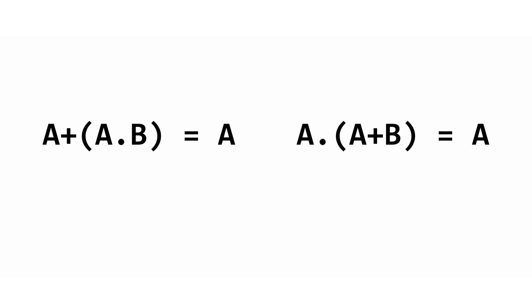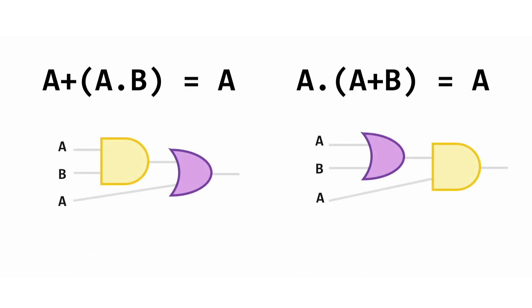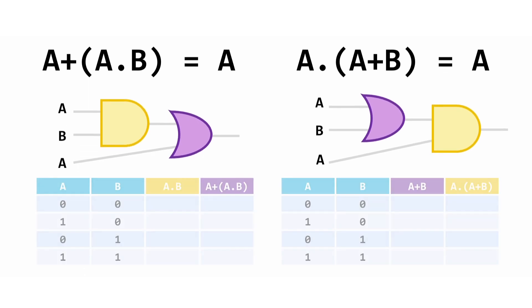But what that means is that in these two circuit diagrams we can remove the costly logic gates and simply run the A cables across instead. Let's take a look at the truth tables.